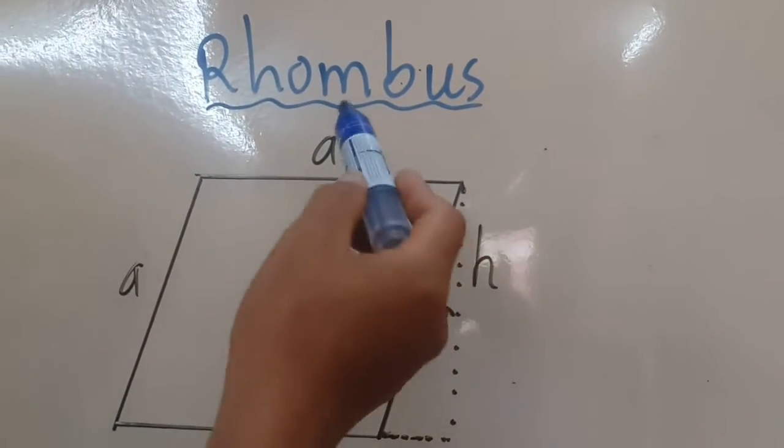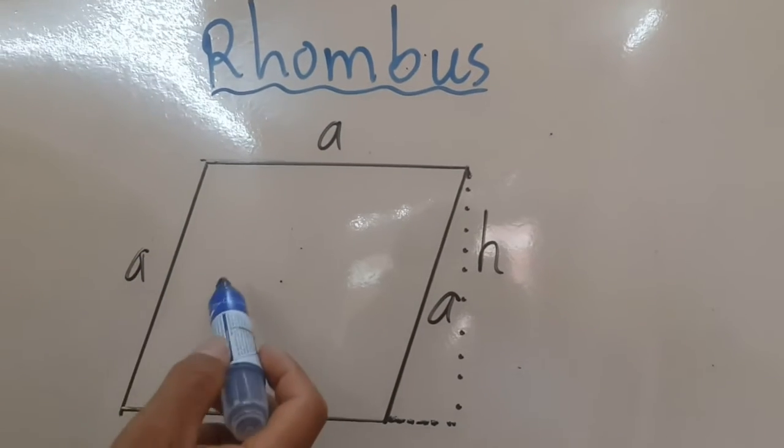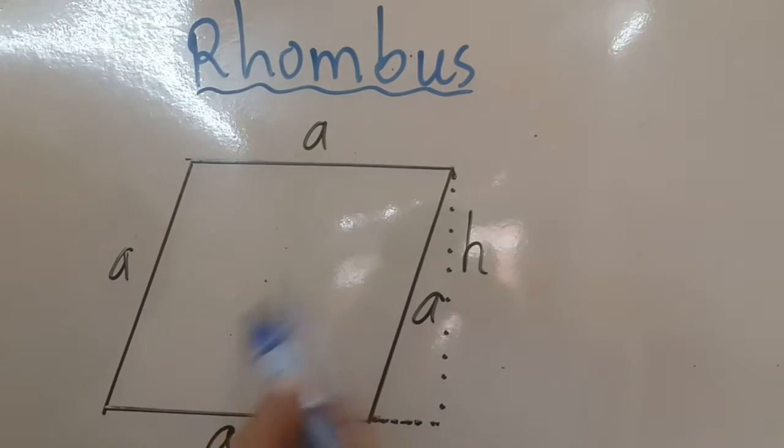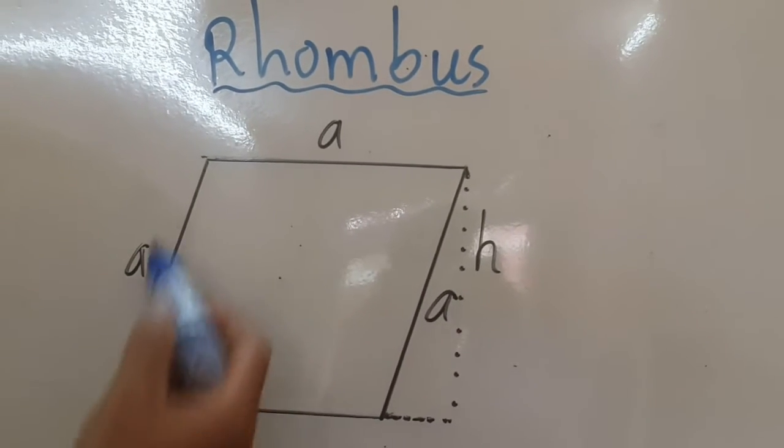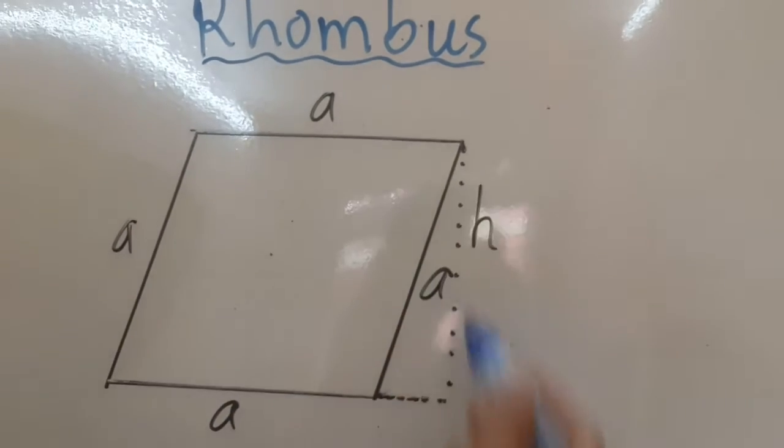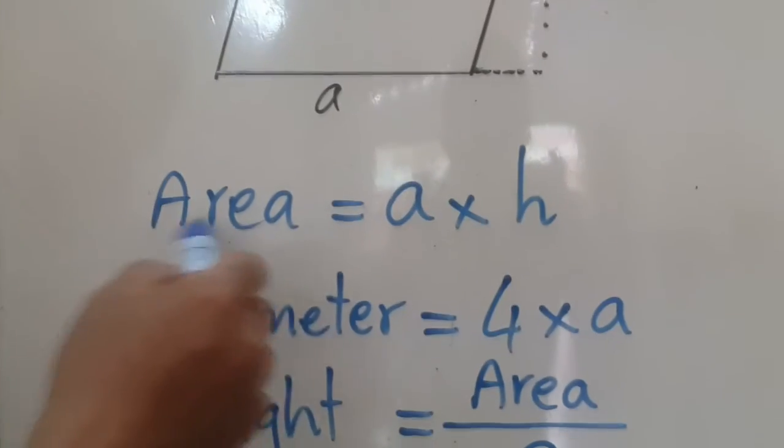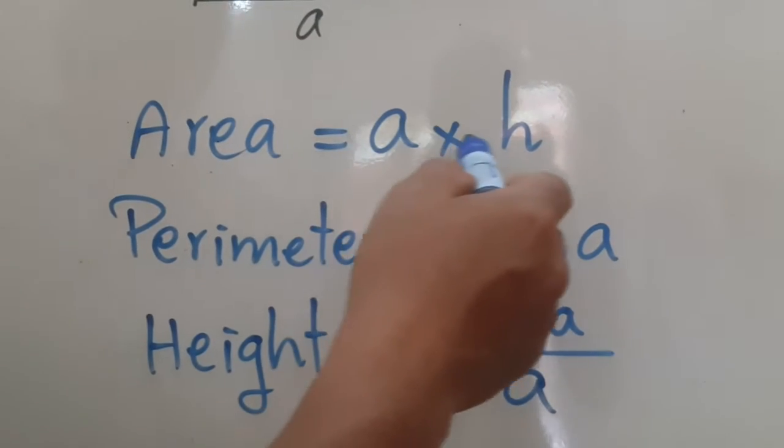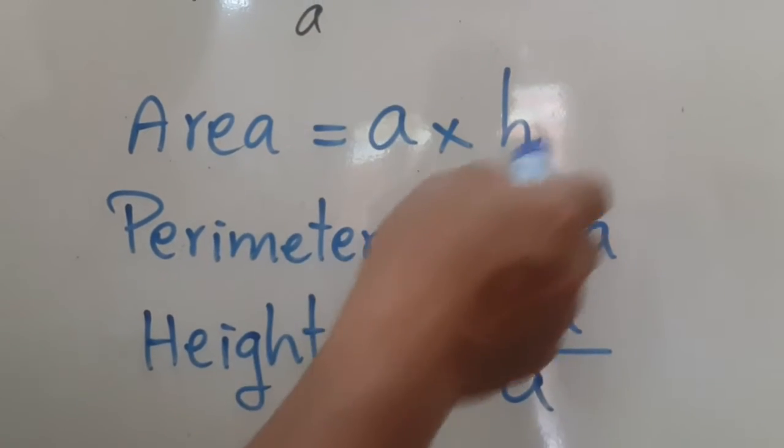Rhombus is a parallelogram. This is a rhombus. If you have a rhombus or an A and H, you can find the area.